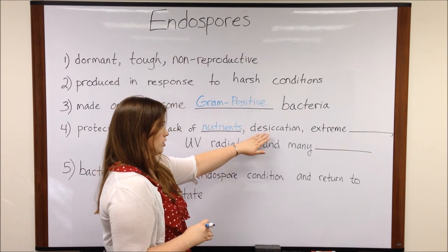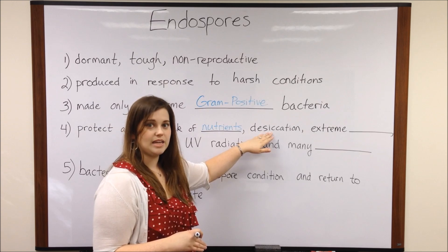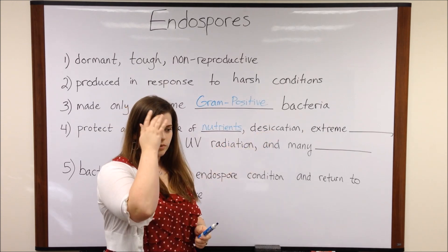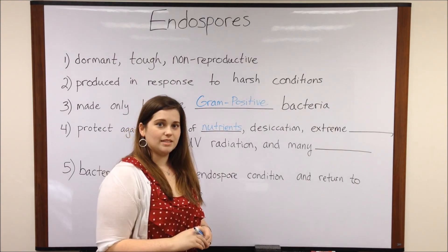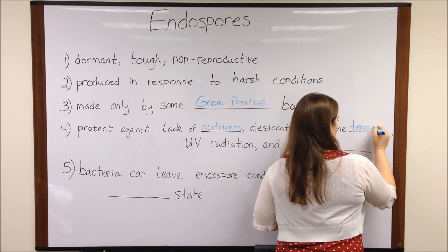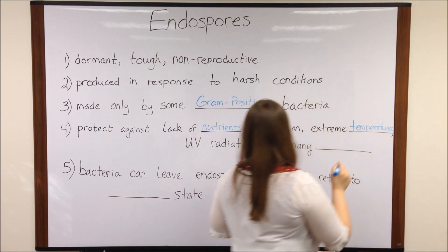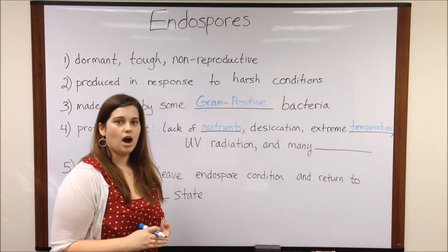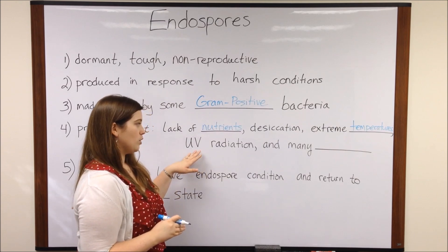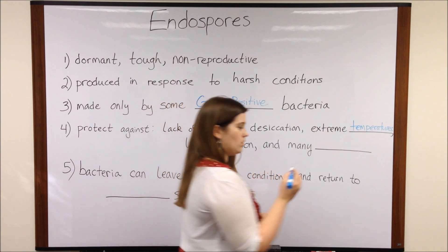The endospores are also highly resistant to desiccation — this means extreme dryness, extreme lack of water. The endospores are also very resistant to extreme temperatures, both hot and cold. Also, the endospores are resistant to UV irradiation as well as many chemicals.